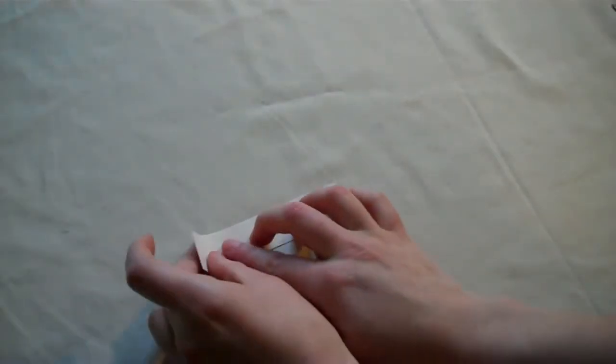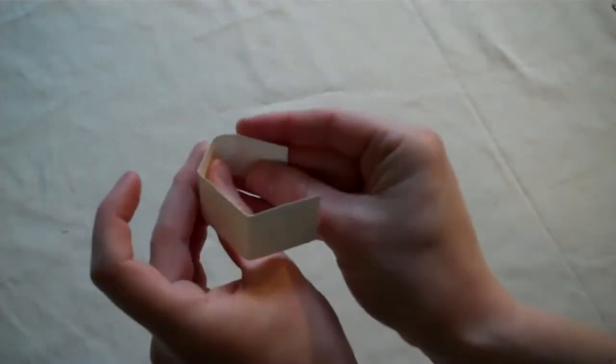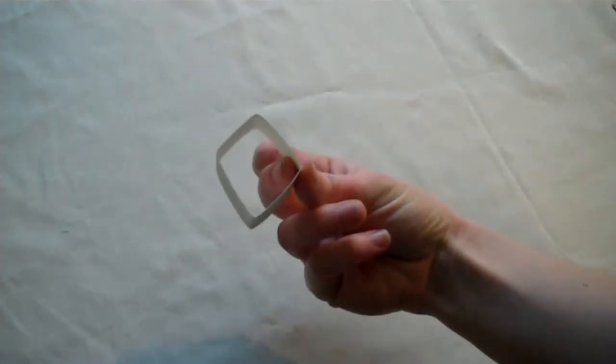And then you're just going to fold it into 4 equal sections. You'll end up with a square.